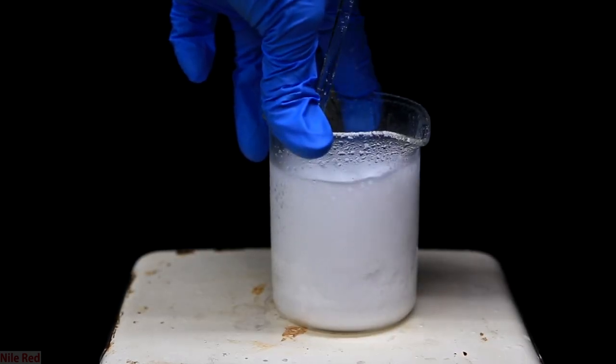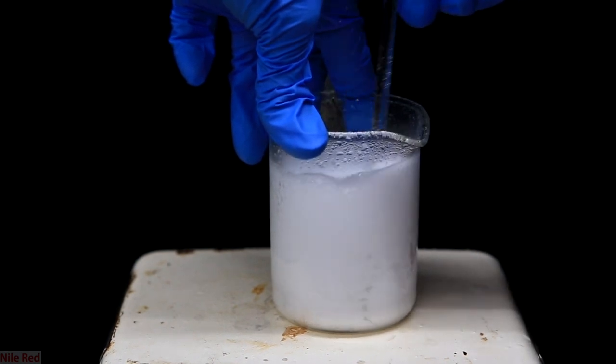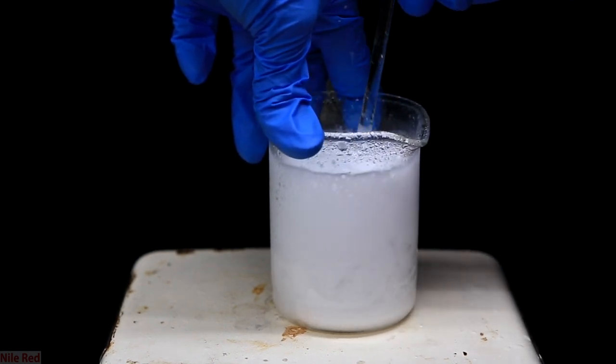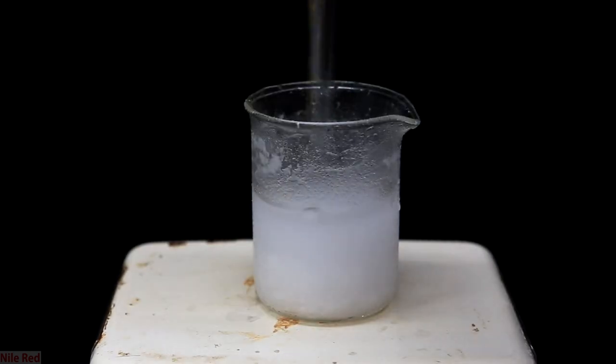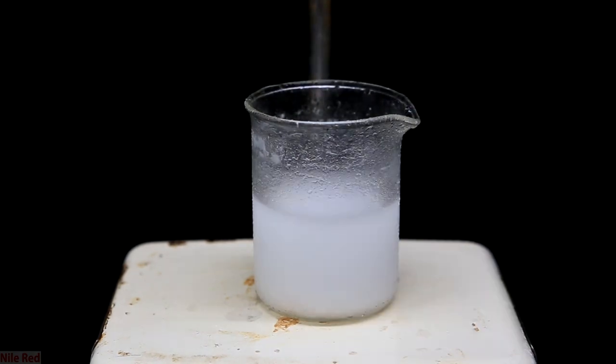So I keep repeating the same cycle of adding formic acid, waiting for the reaction to die down a little bit, and then breaking up chunks with my glass stir rod. After doing this for a while, we'll eventually get to a point where it's a lot more liquidy. Now a stir bar will actually be useful, so I add one.